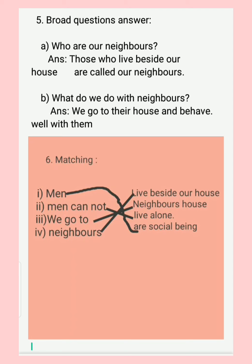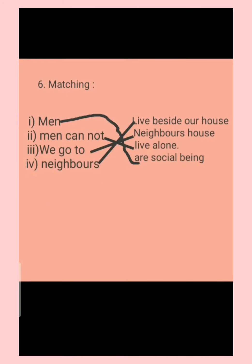Topic 5: Broad question answers. Question A: Who are our neighbors? The answer is those who live beside our house are called our neighbors. Question B: What do we do with neighbors? The answer is we go to their house and behave well with them.